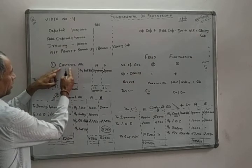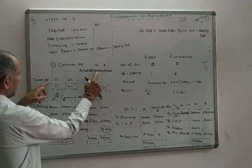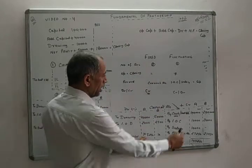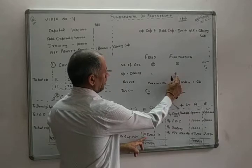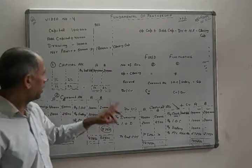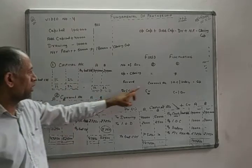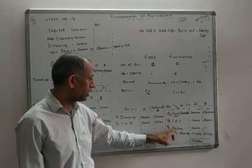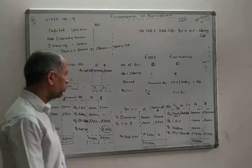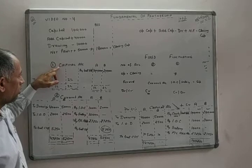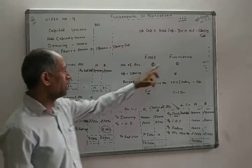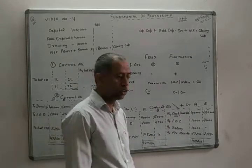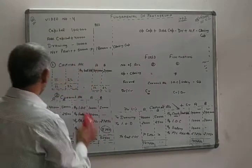When capital is fixed, the opening and closing balance remain unchanged. When capital is fluctuating, the opening and closing balance are not equal. When capital is fixed, transactions are recorded in the current account; when fluctuating, all transactions are recorded in the capital account. The fixed capital account balance is always credit, while a fluctuating capital account balance may be credit or debit.